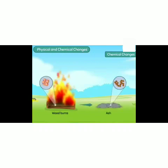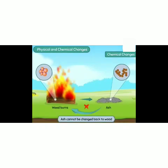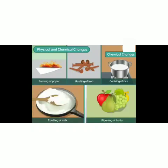When we burn the wood, it changes into ash. Now ash and wood have different molecules — you cannot get wood back from ash. Burning of wood is a chemical change. In a chemical change, the chemical properties of a substance change and a new substance is formed. They are mostly irreversible. Examples: burning of paper, rusting of iron, cooking of rice, curdling of milk, ripening of fruits.